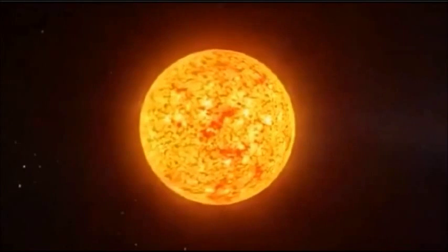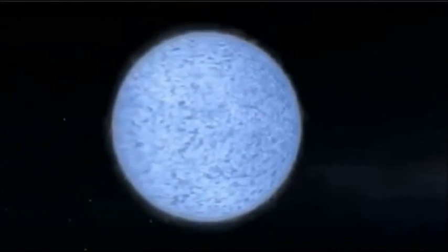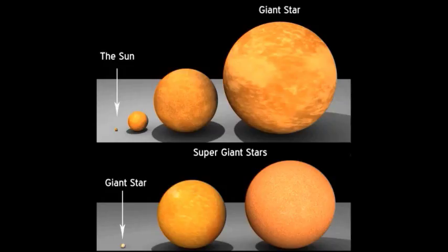All stars in the main sequence aren't alike. Some are much smaller and cooler than the sun, others much larger and hotter. Many of the stars which formed in the early universe were giants, actually blue giants. Our own sun is an average sized orange star.